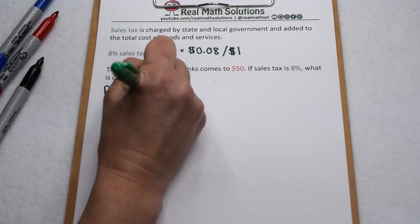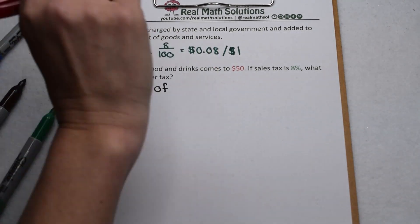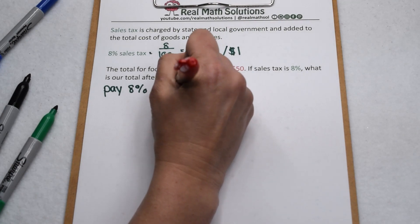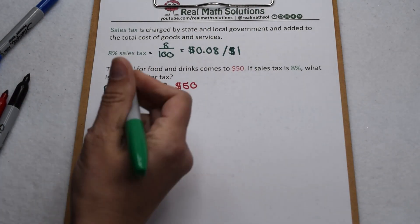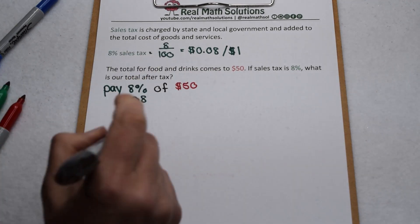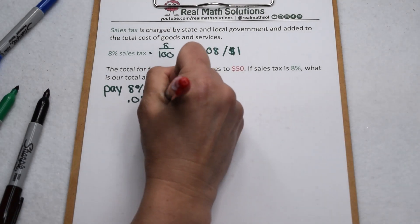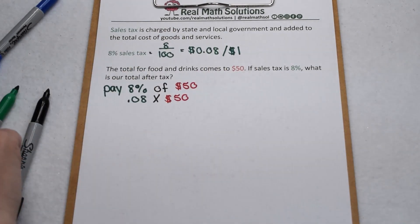First off, that means we're going to have to pay an extra 8% of what we spent. So 8% of the $50 that we spent on food and drinks. In order to solve this, we're going to change 8% to a decimal, so there's 8 hundredths. Of is a key word for multiplication, and we're going to multiply that by our cost of food and drinks. So 8 hundredths times 50.